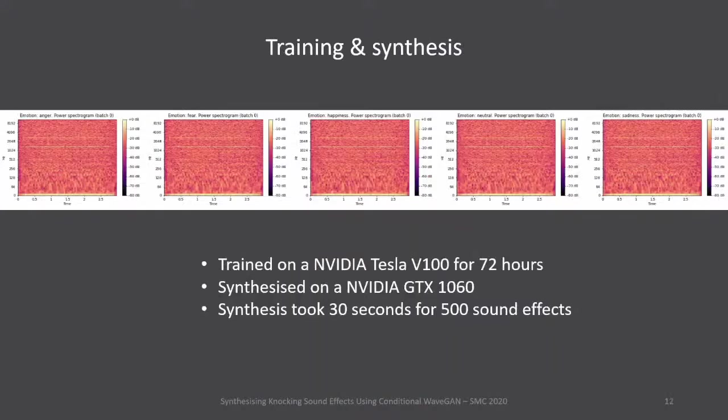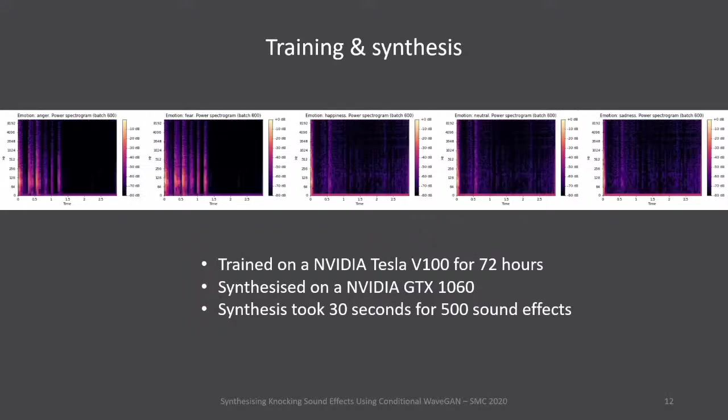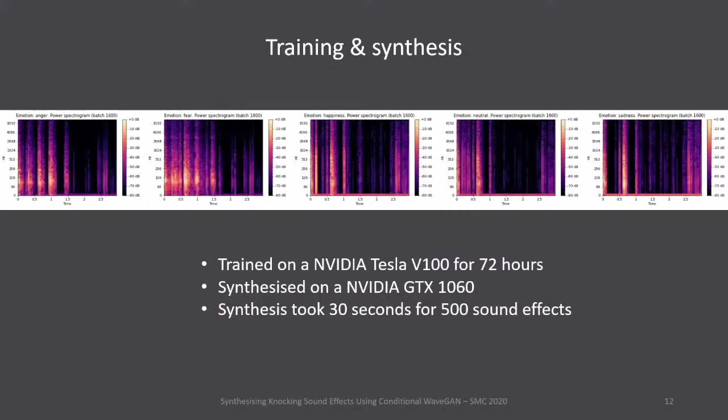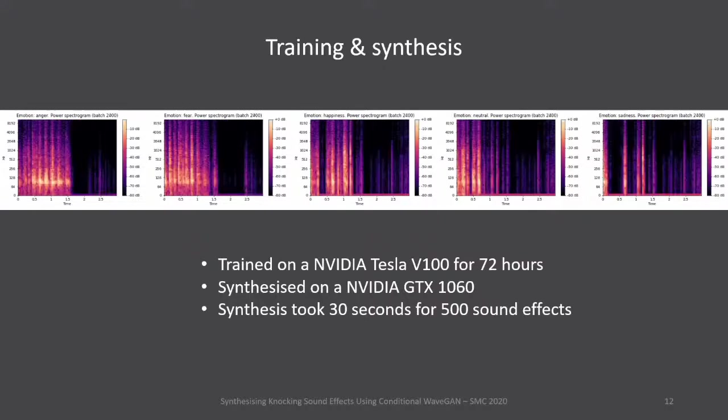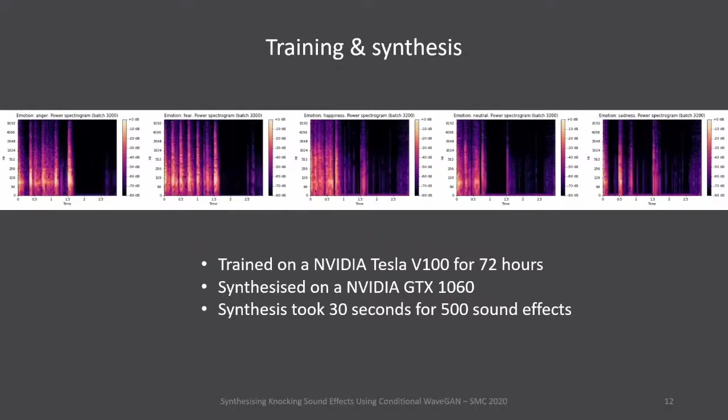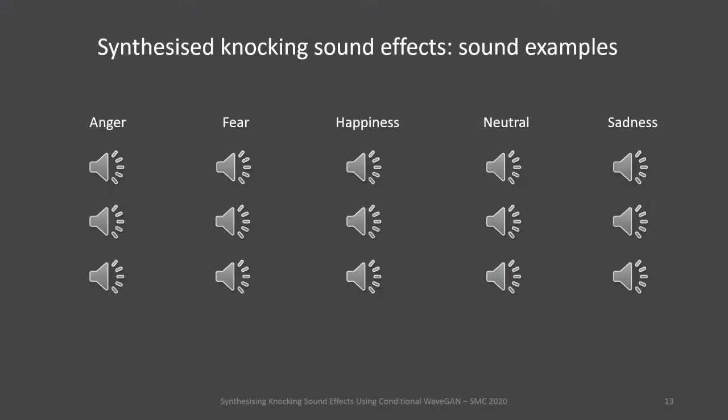Once we had the recorded dataset, we trained our conditional WaveGAN model for 72 hours. We used most of the original WaveGAN hyperparameters; for architecture details, please refer to the paper. Once the model was trained, we synthesized 500 sound effects, 100 per emotion. This took approximately 30 seconds.